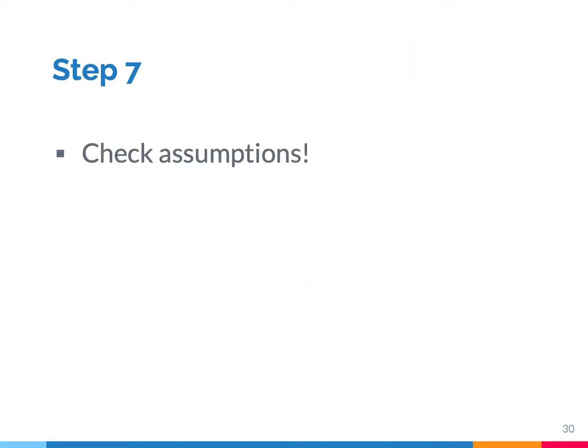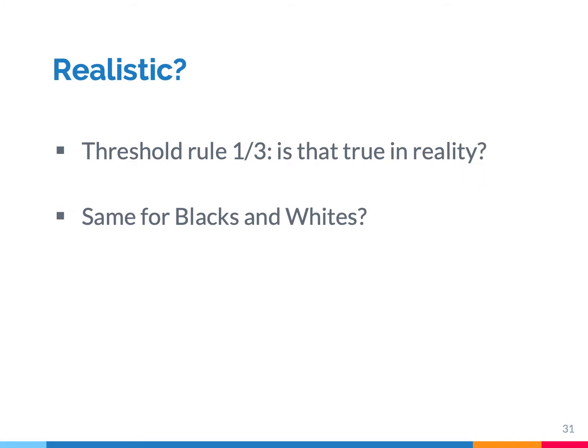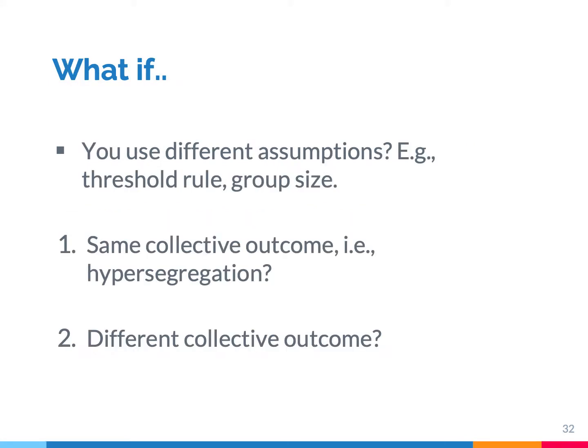Now that we have done these simulations, we can think again about the assumptions included in the model. How realistic are the assumptions? For example, do people really move away when less than one-third is from their own race? Are there any differences between blacks and whites? And what happens if you use different assumptions — do you get the same macro-level results? What if we would use another threshold rule? Do you still see segregation, hypersegregation? These are interesting questions scholars are working on to better understand the segregation phenomenon.